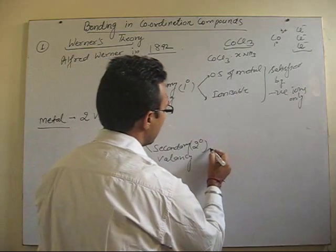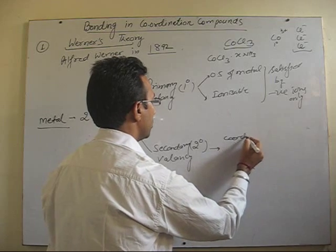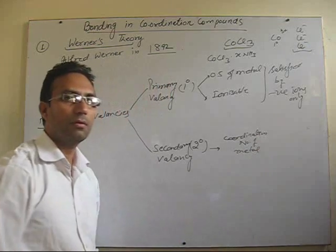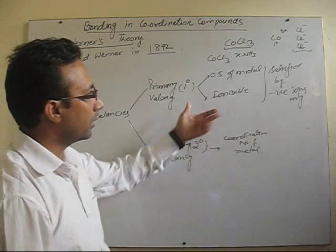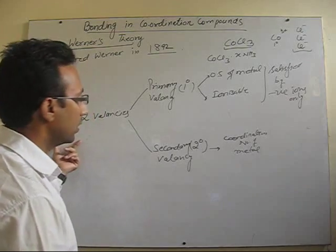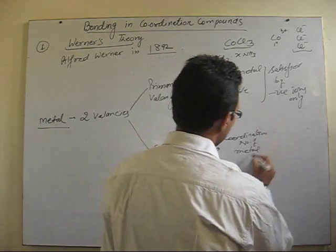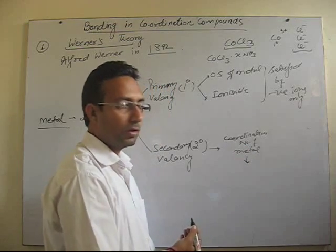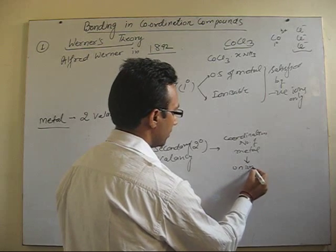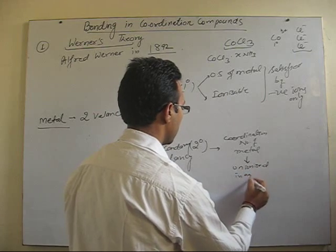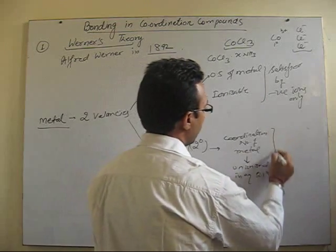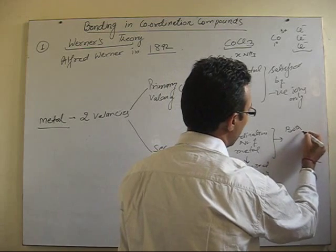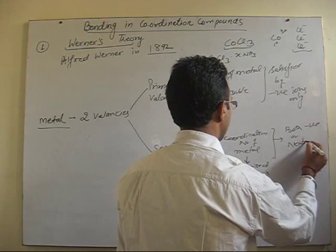About secondary valence, Werner said that secondary valence corresponds to the coordination number of the metal, which varies from metal to metal — that is, with how many neutral or negative species a particular central atom can combine in the compound. Those species which satisfy the coordination number of the metal will be unionized in aqueous solution. Secondary valency is always satisfied by both negative or neutral species.